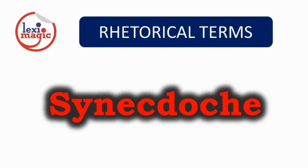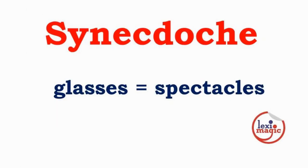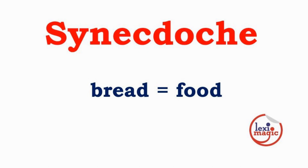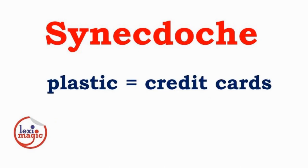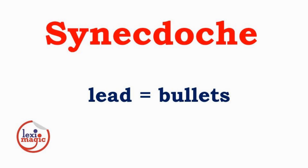Synecdoche refers to a word or phrase that is a part of something and represents the whole of it. Using 'glasses' for spectacles and 'plastic' for credit cards are common examples. 'Bread' can represent food in general or money. 'Wheels' refers to a vehicle. 'If the world is not treating you well' — that would not be the entire world but just a part of it. 'Lead' is commonly used to refer to bullets.